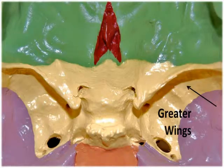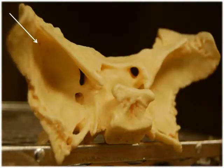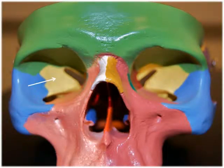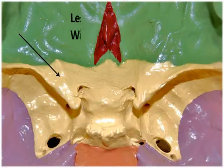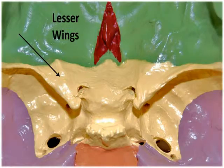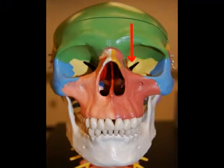The greater wings are the large lateral projections extending out from the body. They form the anterolateral floor of the cranium as well as part of the lateral wall of the skull just anterior to the temporal bone. The lesser wings are the small bony ridges located anterior and superior to the greater wings. These form part of the cranial floor as well as the posterior orbit.